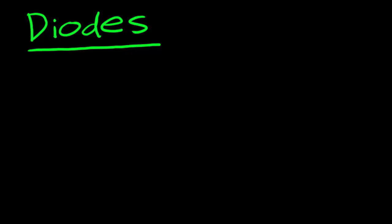A diode essentially only allows current to flow in one specific direction, which is why we must connect an LED, or any type of diode for that matter, in a circuit the proper way around. Diodes have an anode and a cathode that must be connected in the proper order and position within a circuit.